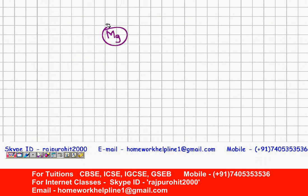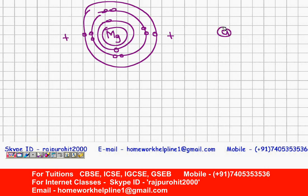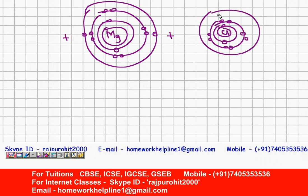Now let's show this with a diagram. Magnesium has 2 electrons in the first orbit, 8 electrons in the second orbit, and 2 electrons in the third orbit. I will show both chlorine atoms on the sides. The first chlorine atom has 2 electrons in the first orbit, 8 electrons in the second orbit, and 7 electrons in the third orbit.